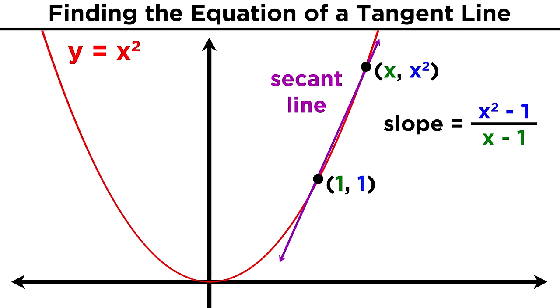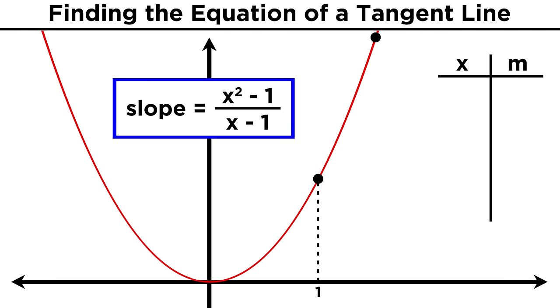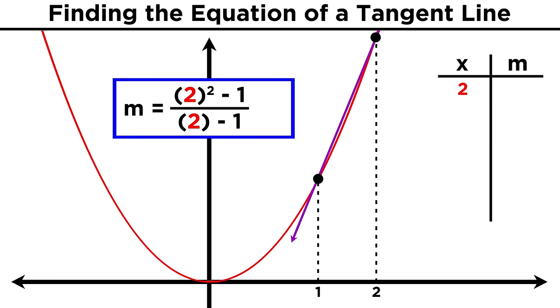If we move this second point around, the line changes, as does its slope. But this expression will stay the same. Now let's plug in some values for this second point and see what happens to the slope of the line. Say we start with x equals two. X squared is four, so we get three over one, or a slope of three for the secant line.